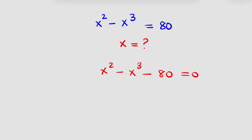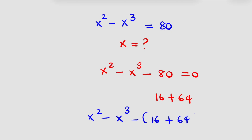Now, 80 itself can be expressed as 16 plus 64. So my equation becomes x squared minus x raised to power 3 minus (16 plus 64) is equal to 0.